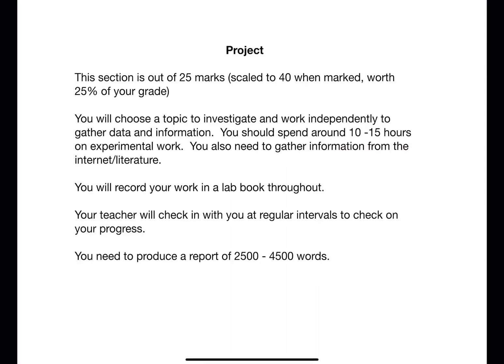The project is carried out in and out of class and is worth 25% of your grade. There is no time limit on the work, although you are advised to take no more than 10 to 15 hours for your practical work. You will be allowed to choose your own topic through discussion with your teacher about feasibility, and each pupil in a class will investigate something different. You will work independently to plan and gather information from the internet or literature in addition to your practical work. You will be given a detailed candidate guide to use throughout your project, and you need to keep detailed records of your work to help you write up your report.